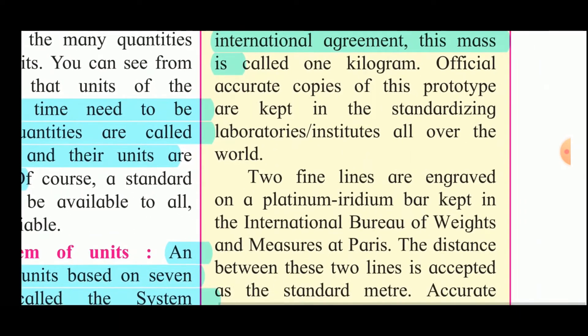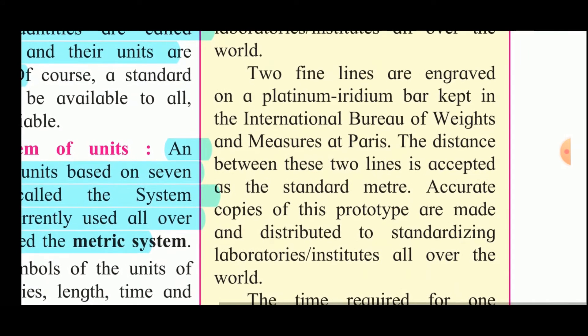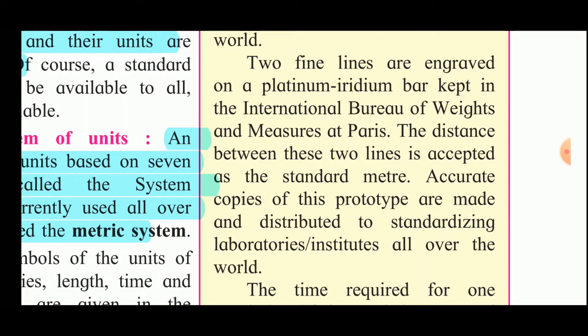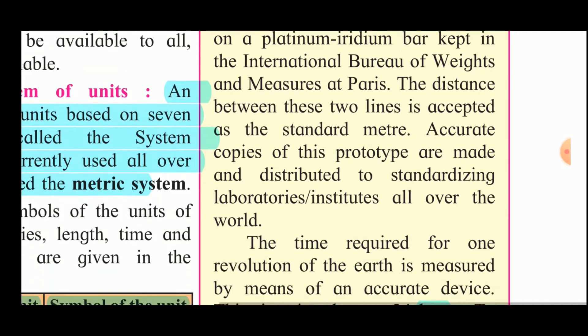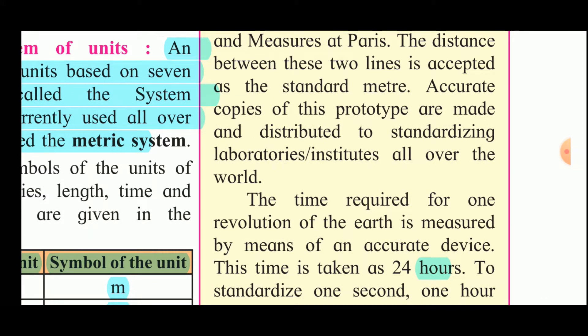Two fine lines are engraved on a platinum iridium bar kept in the International Bureau of Weights and Measures at Paris. The distance between two lines is accepted as 1 meter. Accurate copies of this prototype are also made and distributed to the standardizing laboratories or institutes all over the world. This fixed distance, 1 meter, will remain same all over the world.